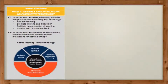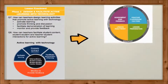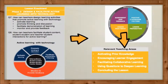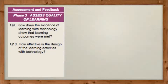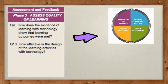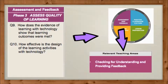Phase 2 of the SLS pedagogical scaffold guides teachers to design and facilitate active learning with technology. It sits with the STP teaching process of lesson enactment. Phase 3 of the SLS pedagogical scaffold guides teachers to assess the quality of students' learning. It sits with the STP teaching process of assessment and feedback.